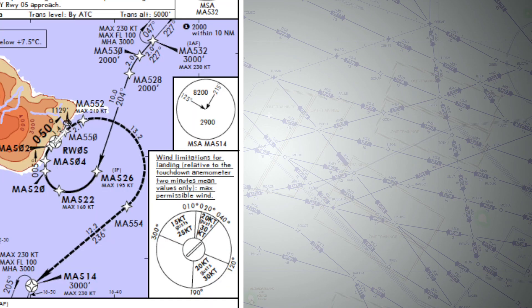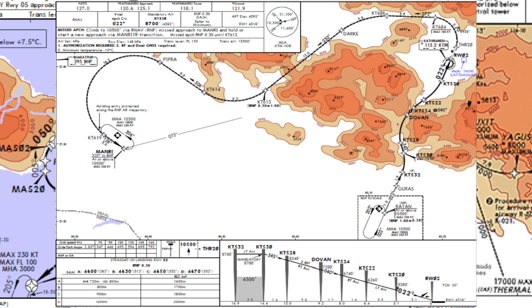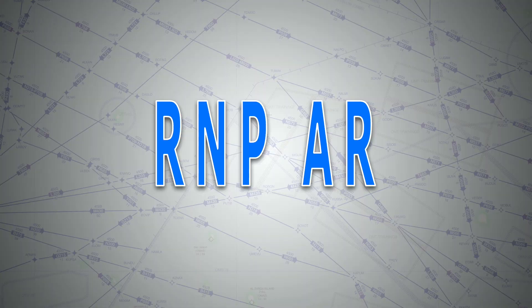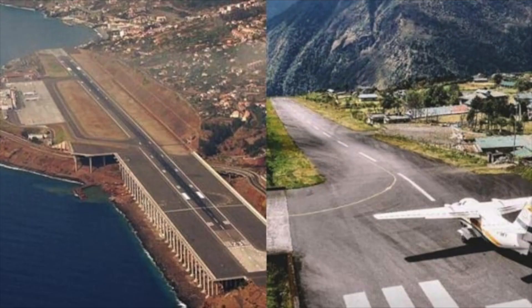Let's have a look at some RNP-AR approaches and see if we can spot anything in common. If you said all of them have curved approaches and happen to serve airports in challenging terrains, then you are right, and that is really the point of RNP-AR. It was developed to serve airports with challenging terrains, hence the approach is not necessarily an easy straight-in terrain-free approach. Therefore, in order to be able to fly such approaches, certain minimum criteria must be met, for safety reasons obviously.